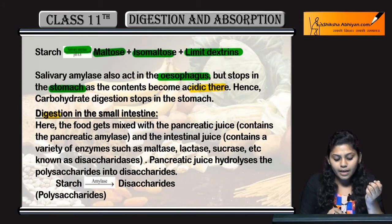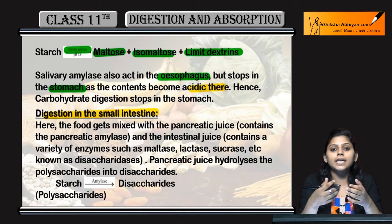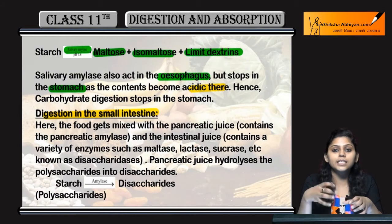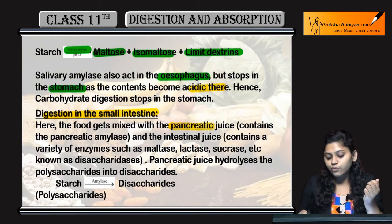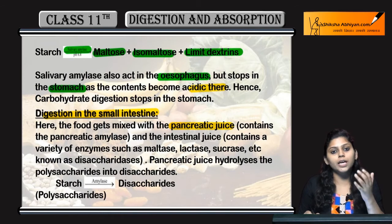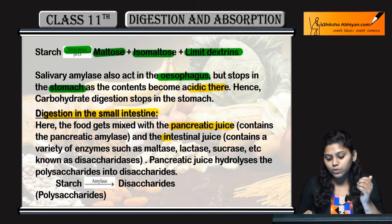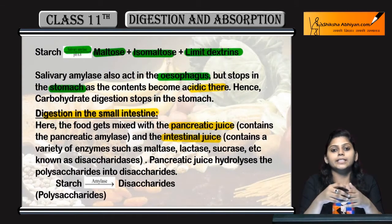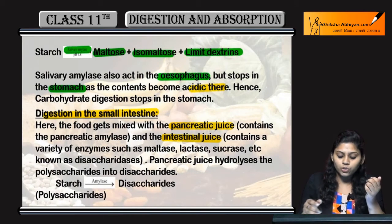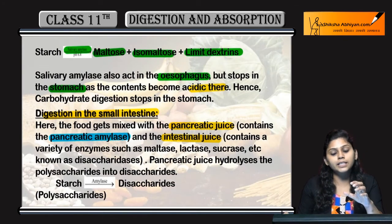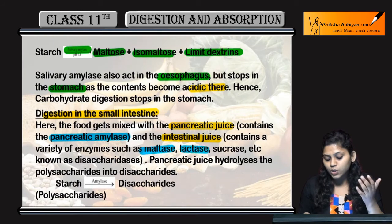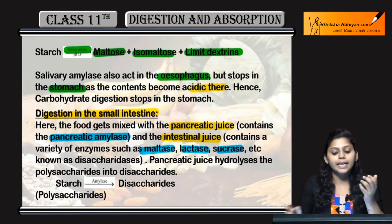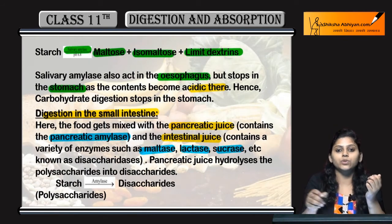In the small intestine, digestion resumes. The food that arrives mixes with pancreatic juice and intestinal juice. Pancreatic juice contains pancreatic amylase, and intestinal juices contain maltase, lactase, and sucrase.